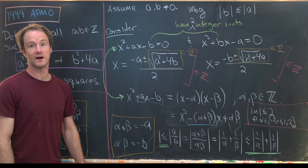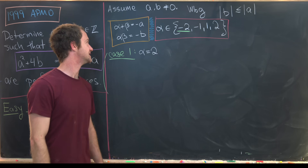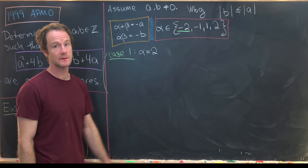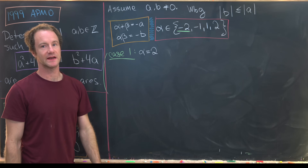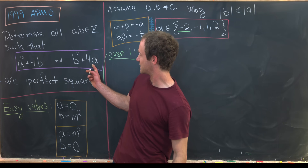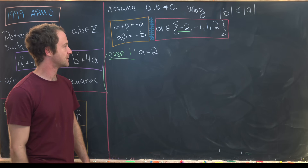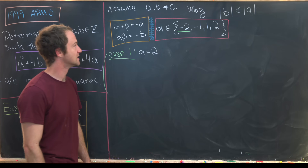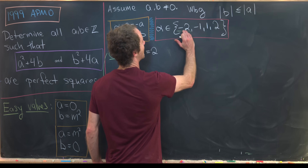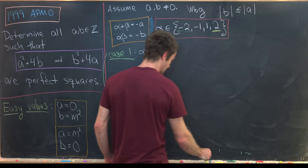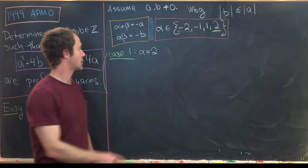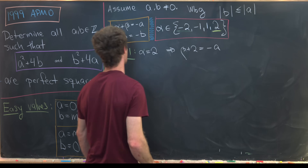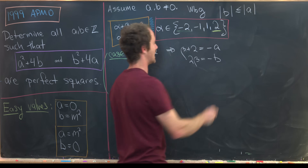We'll work through the cases one at a time, proving two in the video and leaving alpha equals -2 and alpha equals 1 as homework exercises. First, the case alpha equals 2. Plugging in, we get: beta plus 2 equals minus a, and 2 times beta equals minus b.